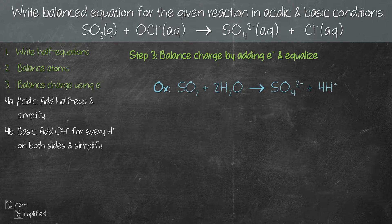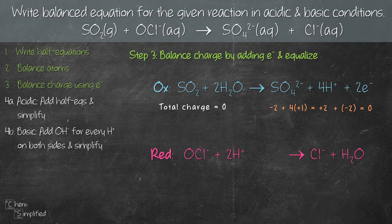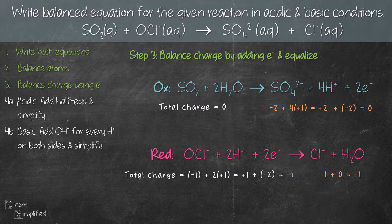Moving on to step 3, we're going to balance the charge by adding electrons. From the oxidation equation, the total charge on the left hand side is 0 because SO₂ and H₂O are neutral compounds. On the right hand side we have -2 from SO₄²⁻ and +4 from the 4H⁺, giving a total of +2. To balance the charge, we add 2 electrons on the right hand side, making both sides 0. For the reduction equation, the left has a total charge of +1 and the right has -1, so we add 2 electrons on the left, giving -1 on both sides.